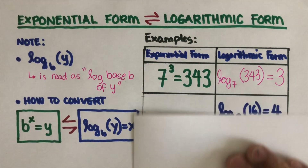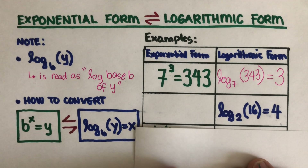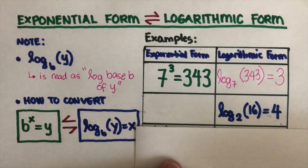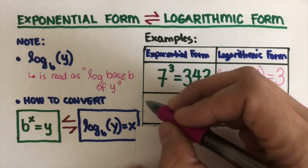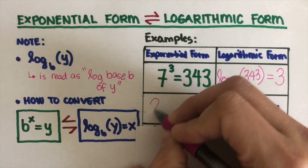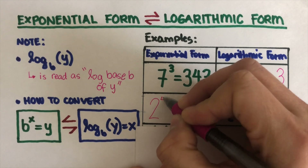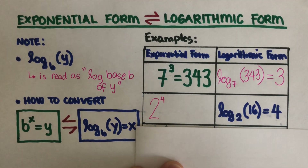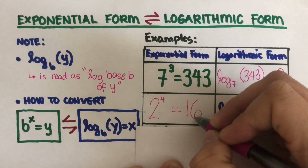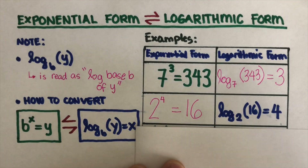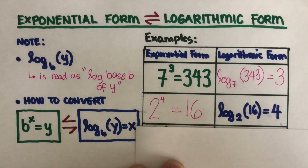And that is equal to 3. So, let's take the next one. How do we set this up back to its exponential form? This would be 2 to the power 4 is equal to 16. That makes sense, because 2 times 2 is 4, 4 times 2 is 8, 8 times 2 is 16.